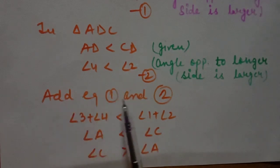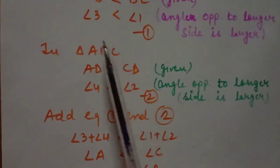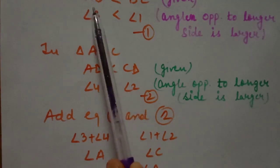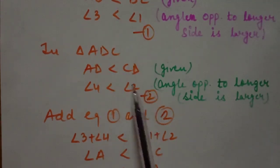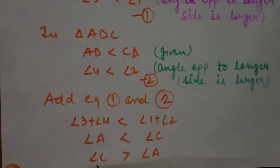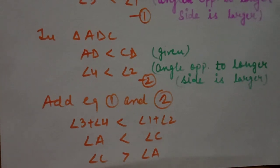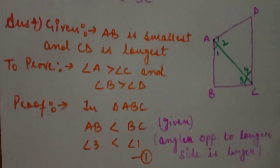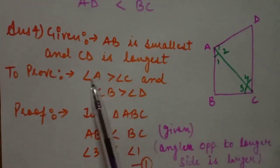Adding equation 1 (angle 3 less than angle 1) and equation 2 (angle 4 less than angle 2): angle 3 plus angle 4 is less than angle 1 plus angle 2. Since angle 3 plus angle 4 equals angle C, and angle 1 plus angle 2 equals angle A, we get angle C is less than angle A, or equivalently angle A is greater than angle C. This is the first result proved.